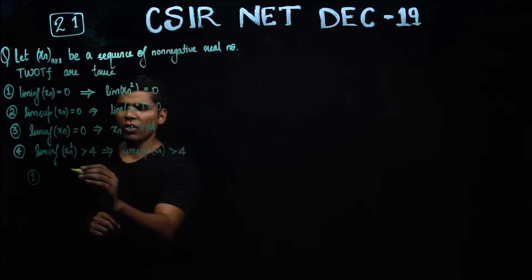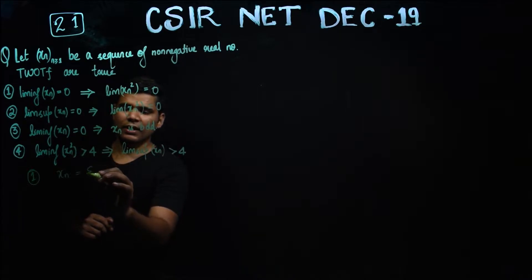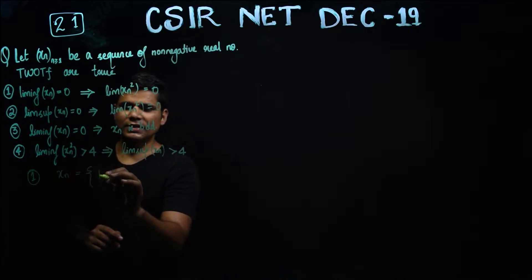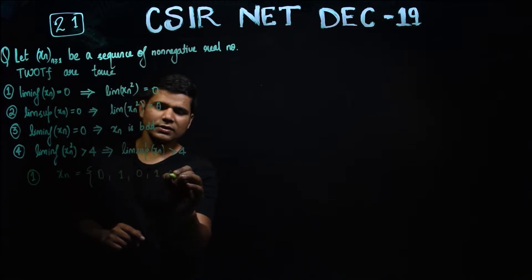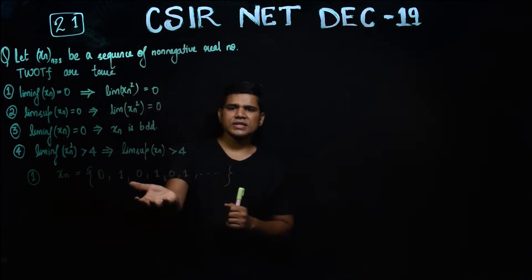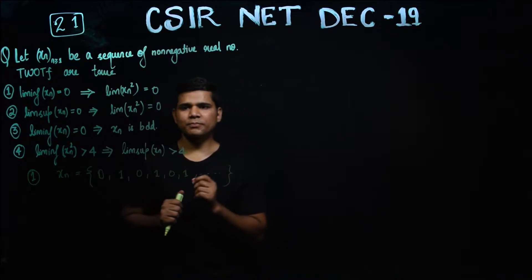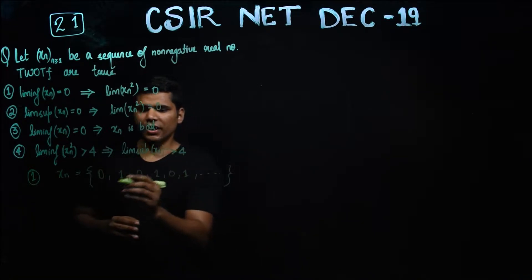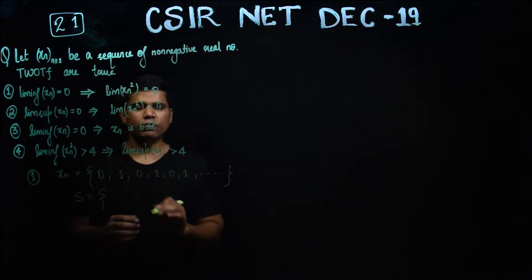I will take the sequence like this — I am writing it as a set: 0, 1, 0, 1, 0, 1, and so on. If I take this sequence, you can see it is a bounded sequence. Using the theorem, you can figure out what is the limit superior and what is the limit inferior. The limit points of this sequence are 0 and 1.